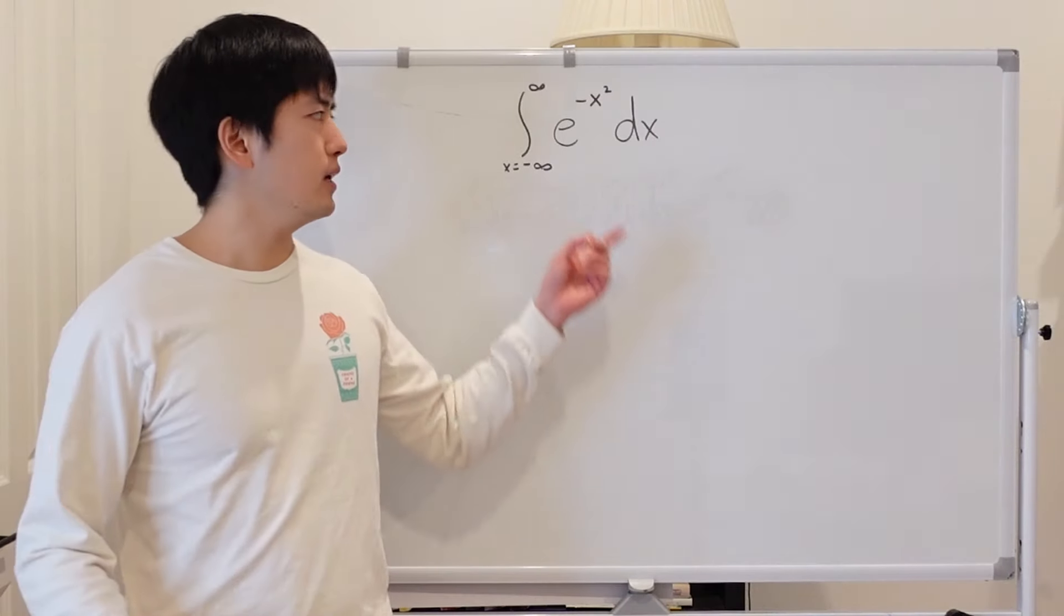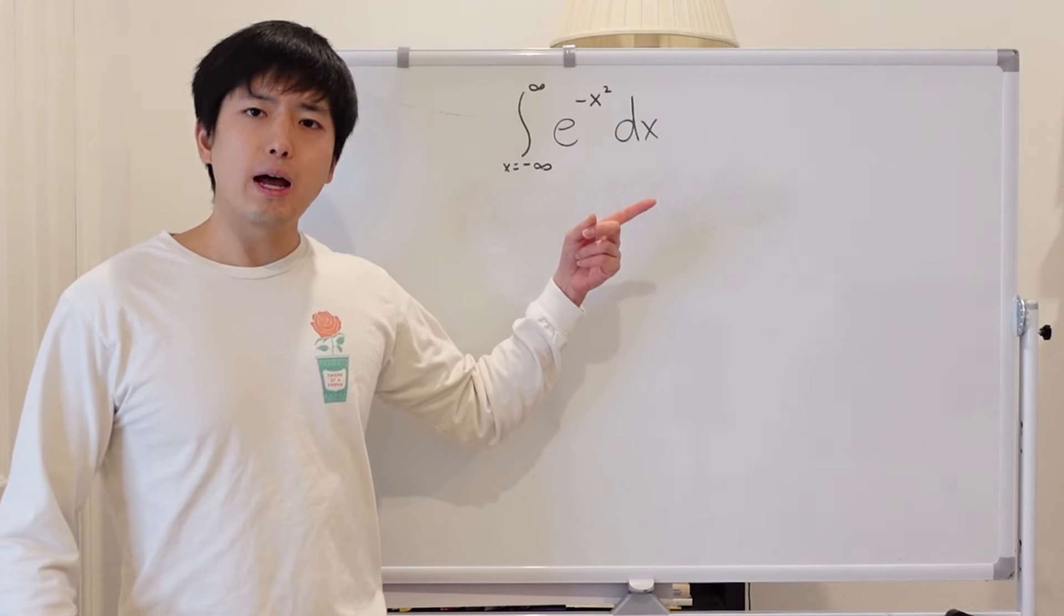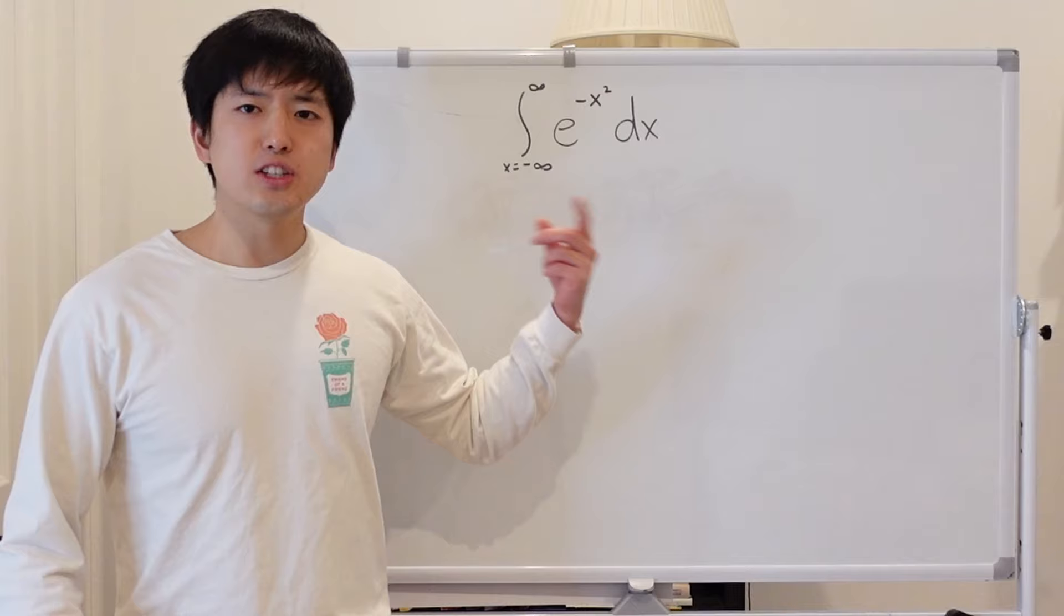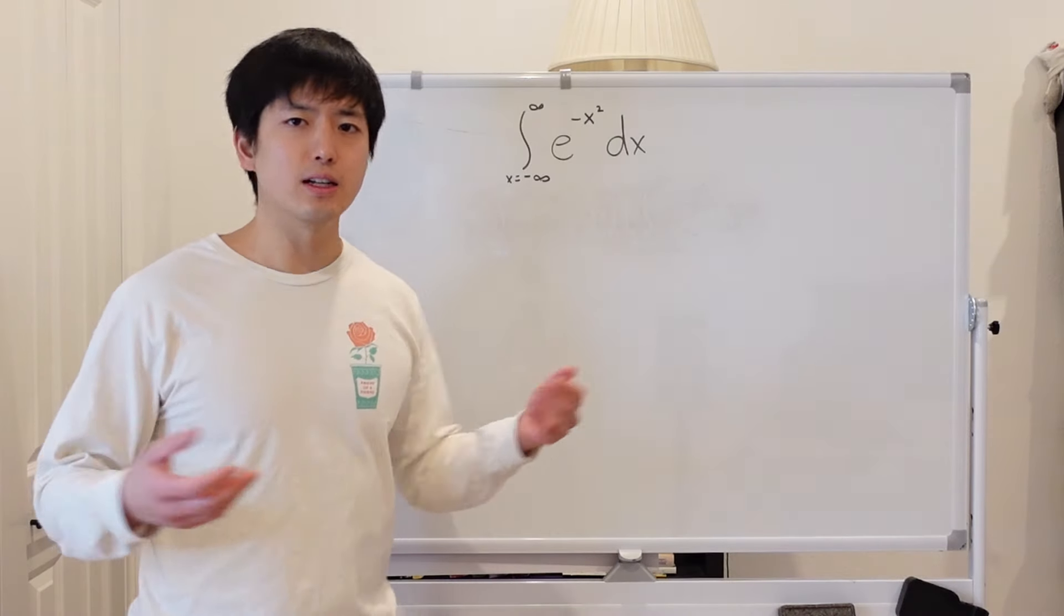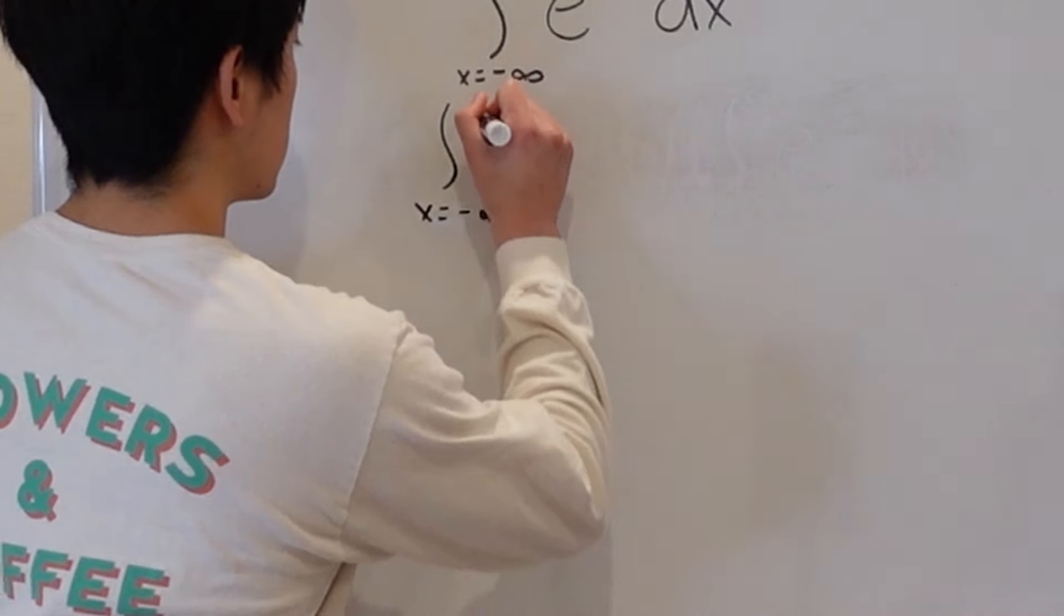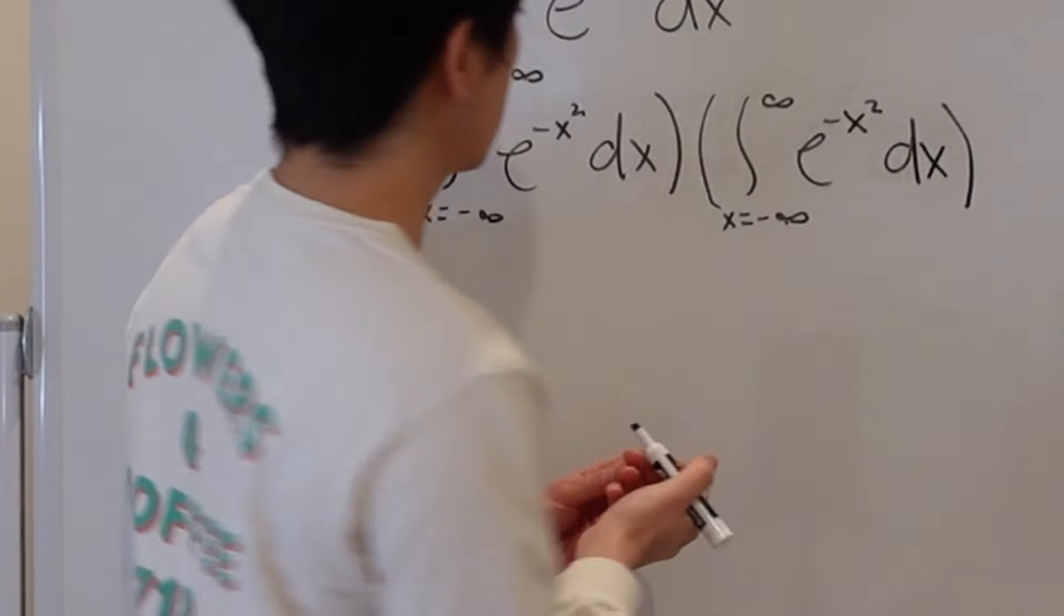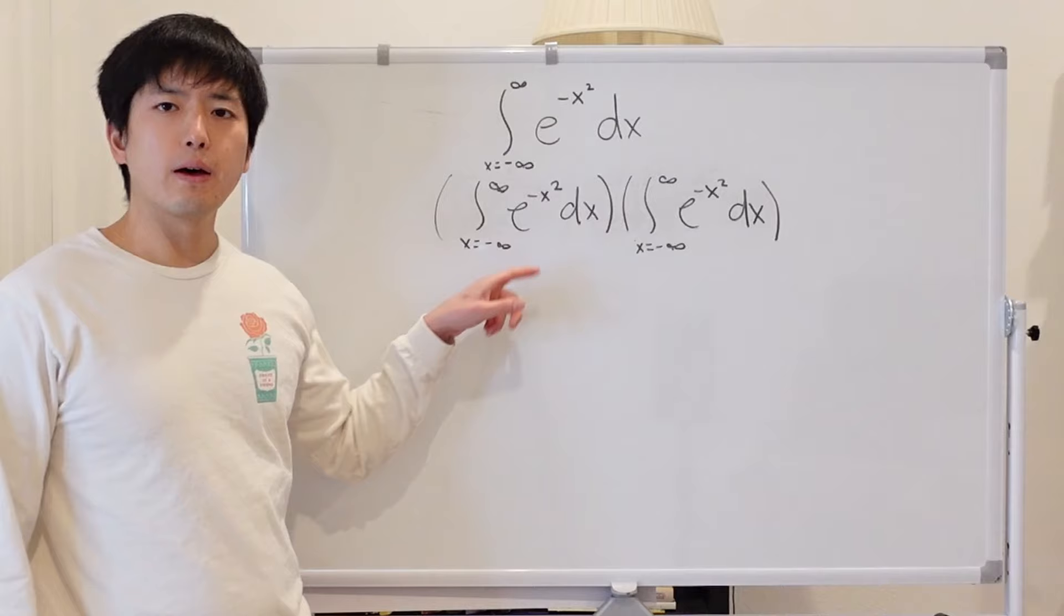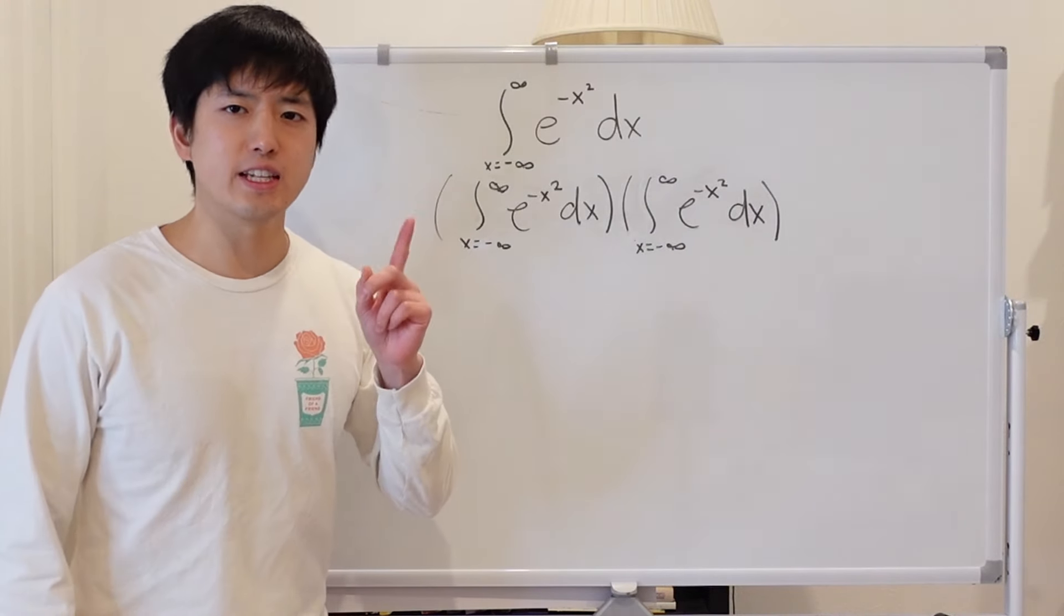So the first step we're going to do in solving this integral is we're going to take this expression and multiply it by itself, essentially squaring it. And it will become clear why we're doing this step later on. Now that we have the expression multiplied by itself, we're going to do something very interesting. And here's the trick.